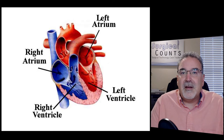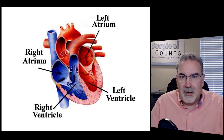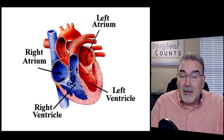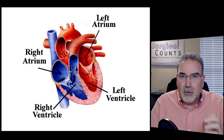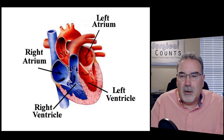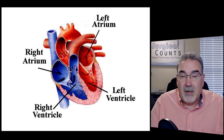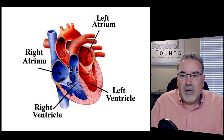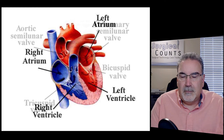We're going to go over the anatomy of the heart again because it will appear on the test and probably on the national boards. We have the four chambers of the heart. At the top we have the atria - the right atrium and the left atrium. And down at the bottom we have the right ventricle and the left ventricle.